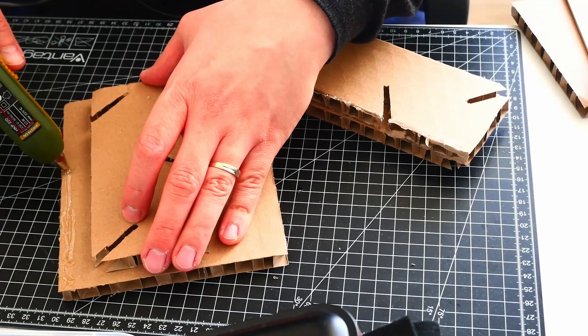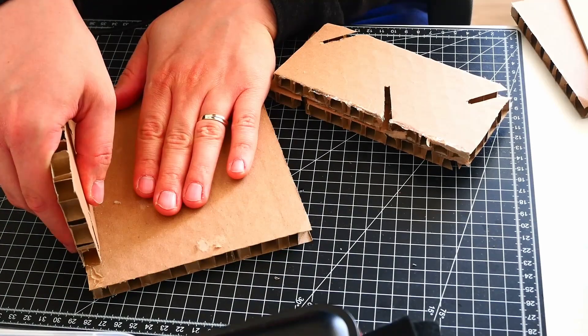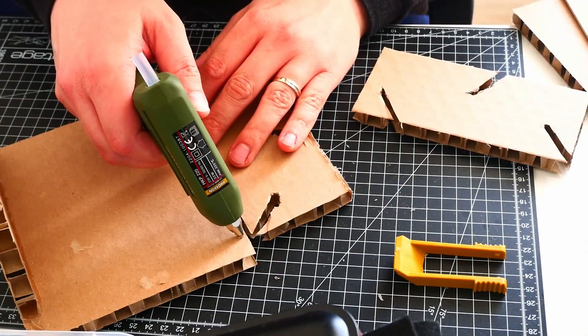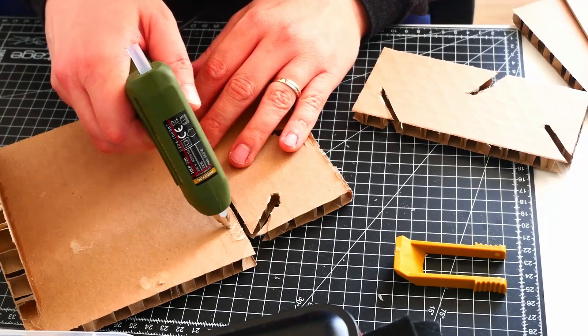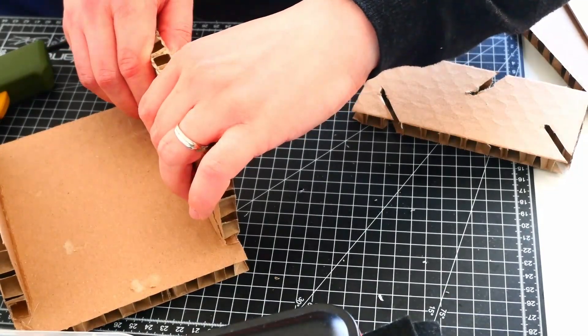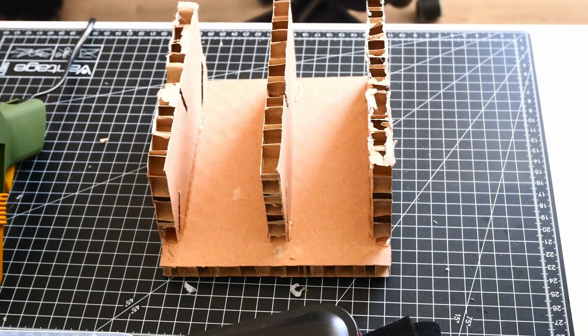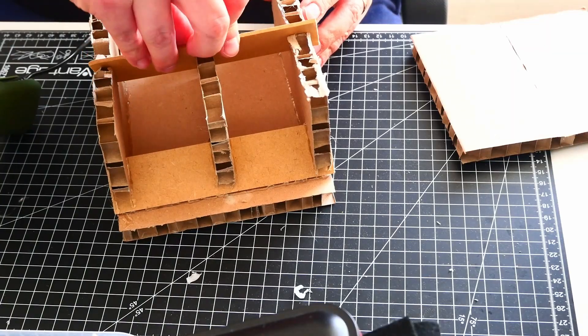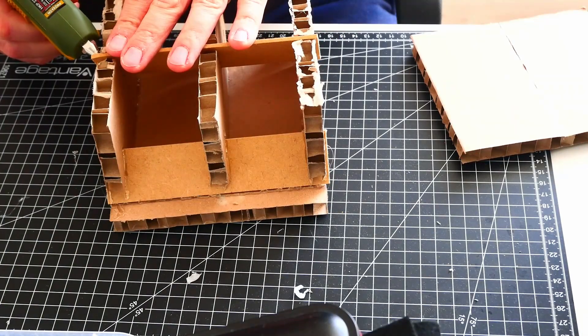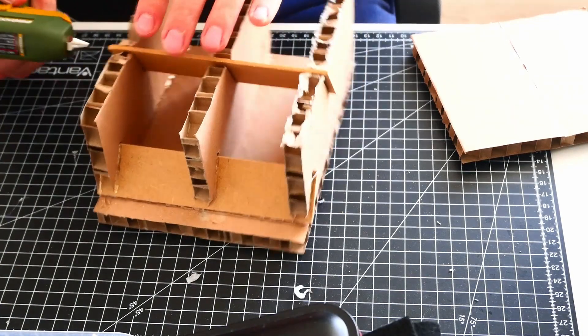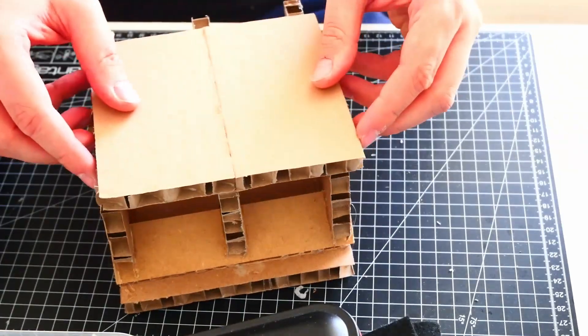Once we have the pieces, we can glue it all together using hot glue. Again, do not worry too much about getting it perfect. All of this will be covered up. So rather glue a little bit more than not enough. Now we simply push the almost wood pieces through the slots. Glue them in place with hot glue. And then we just close up the front.